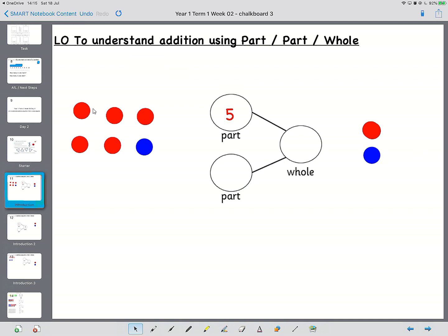Brilliant there are five and we put that five in one part of the part part whole diagram. So my next question is how many blue counters are there? That's right there's one blue counter so we put that in the other part.